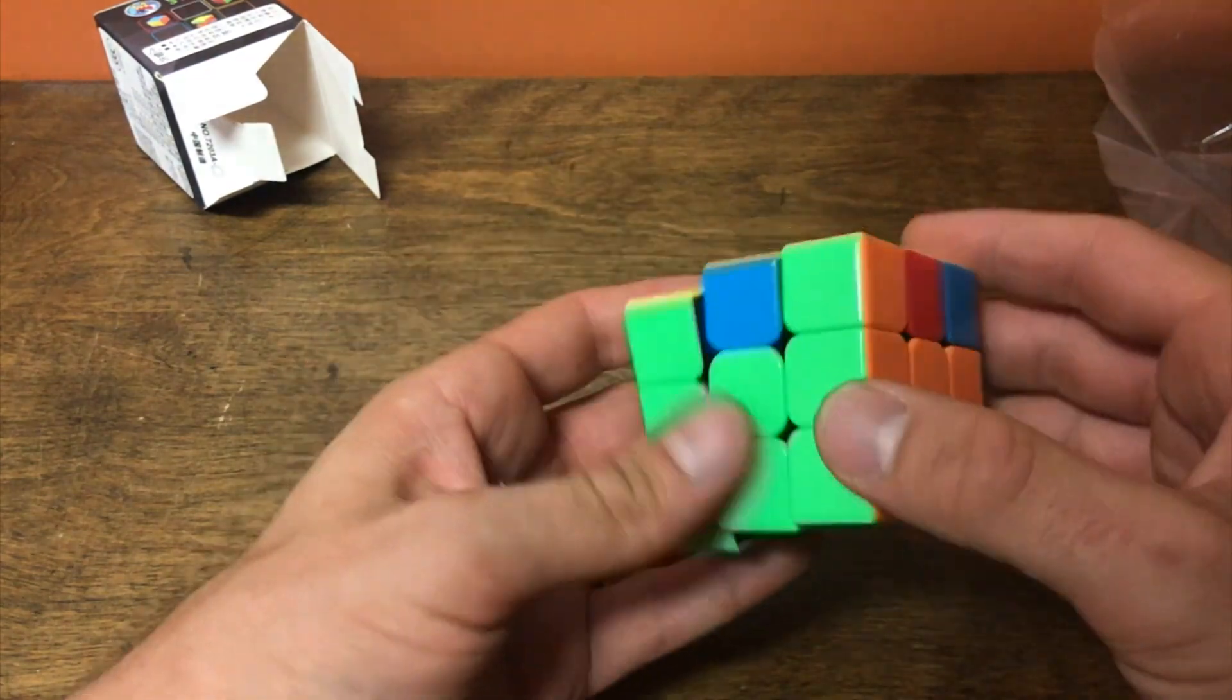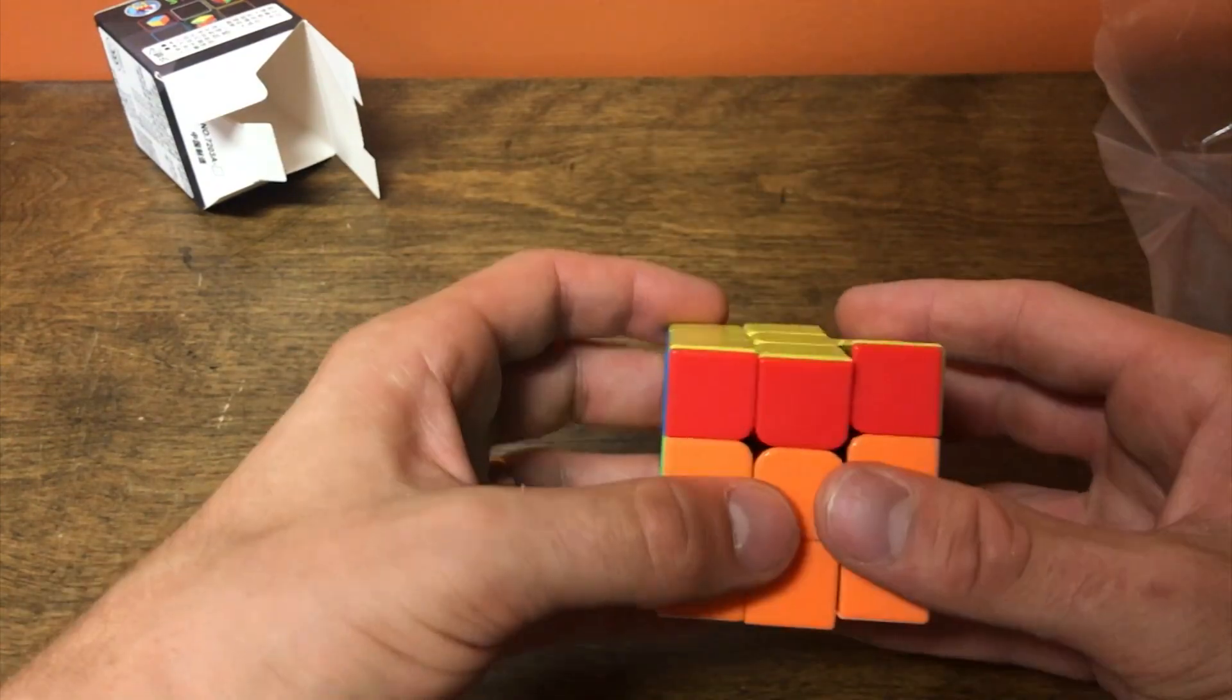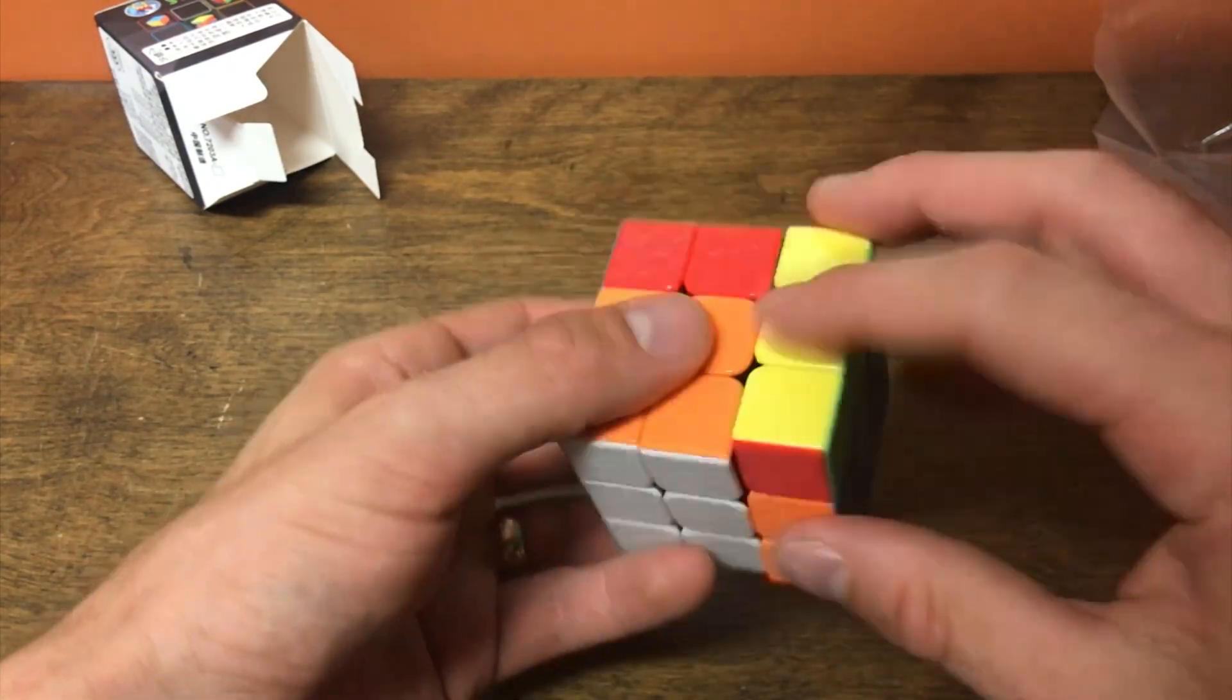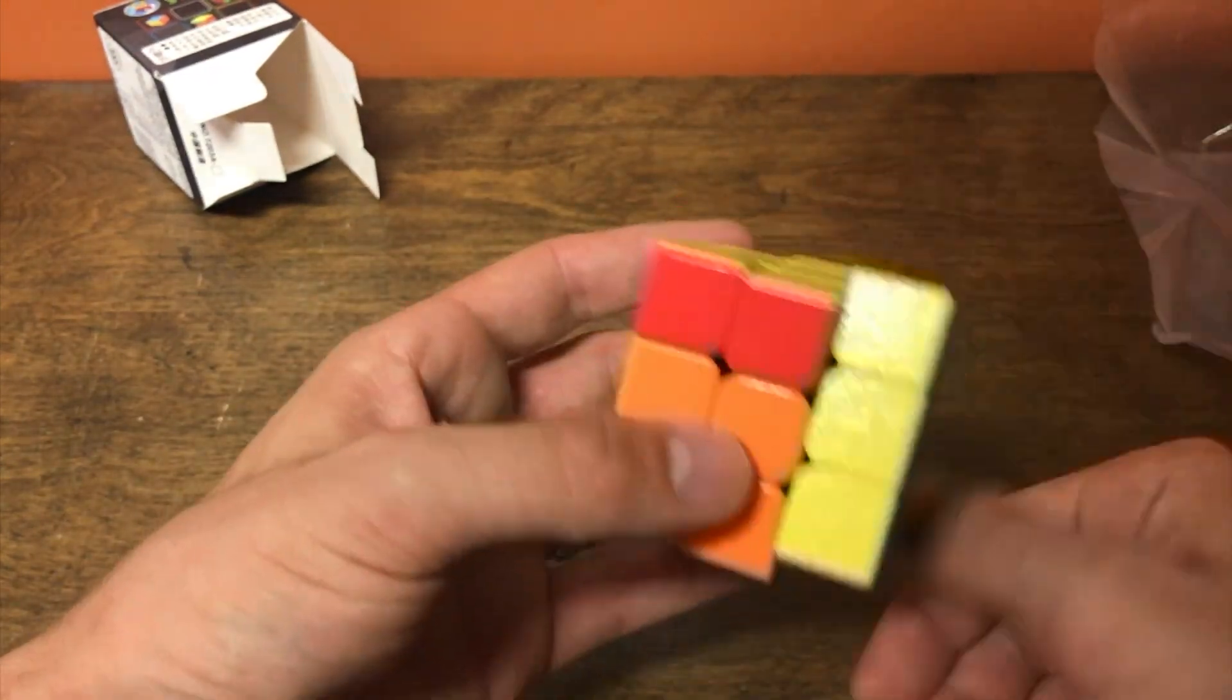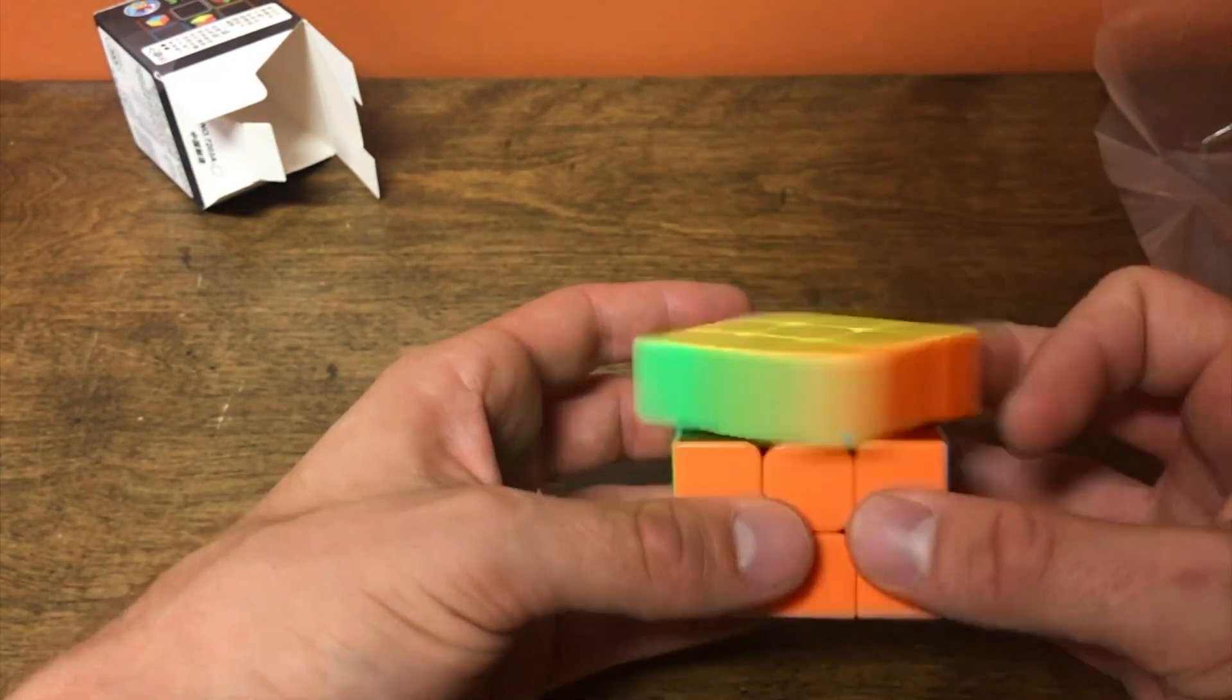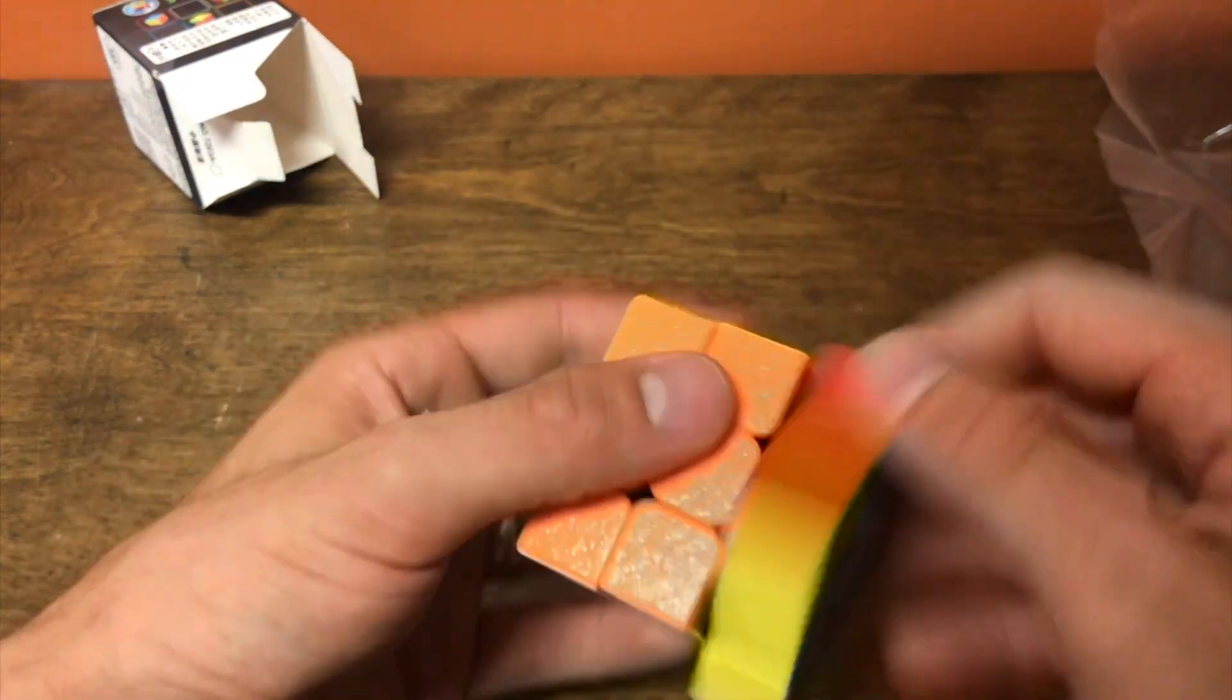I almost want to say this cube feels floaty. Like, it's so fast. But even though... I don't know... It's smooth. It's not soft plastic Shenzhou smooth. It's like... I don't even know the word to use.